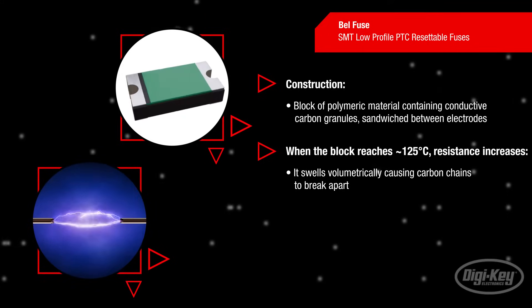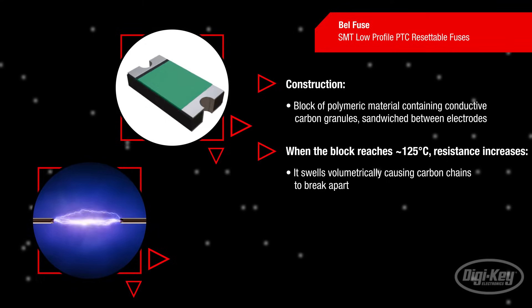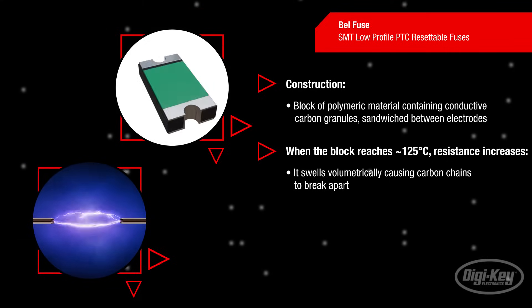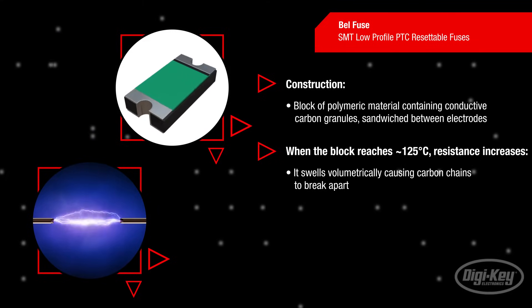This behavior results in a sharp increase in resistance across the two plates, which all but eliminates current flow through the device, allowing just enough residual current flow to maintain the block's internal temperature at 125 degrees Celsius.